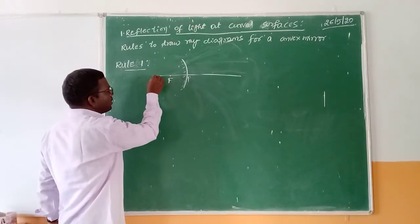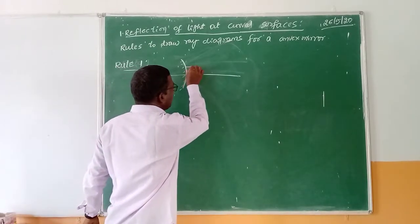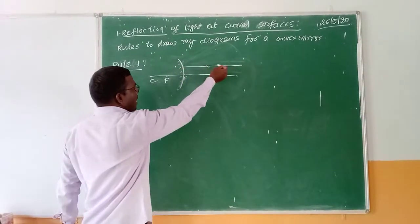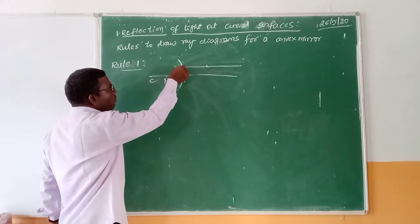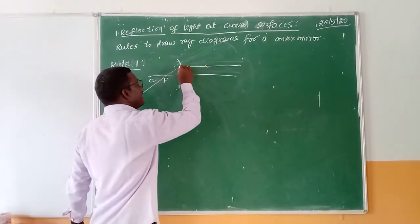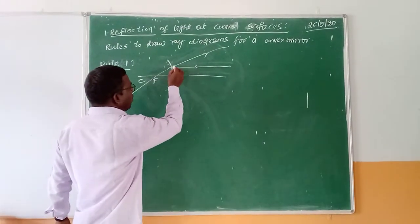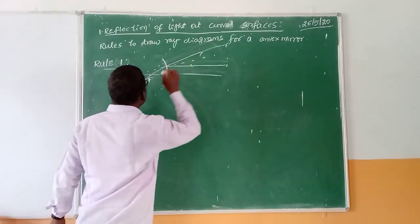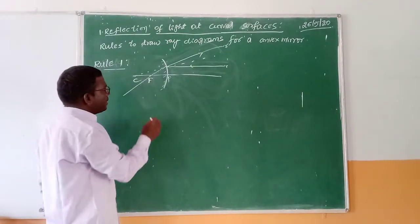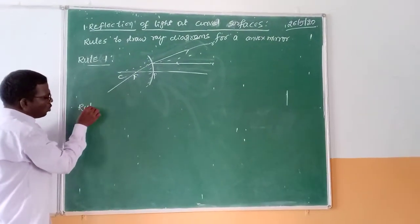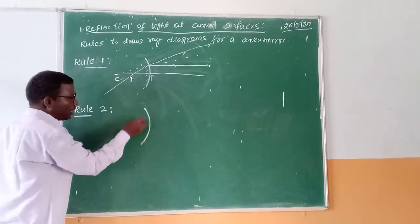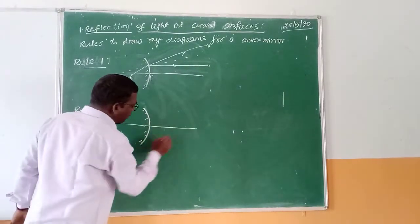Now let us discuss Rule 1. In Rule 1, let us imagine that it is a convex mirror and draw a principal axis. Imagine the pole, focus, and center of curvature. Draw a light ray going incident parallel to the principal axis. After getting incident parallel to the principal axis, the light will get reflected and appears to pass through the focus, getting reflected back into the same medium. The normal to this incident ray and also the reflected ray will pass through the center of curvature.